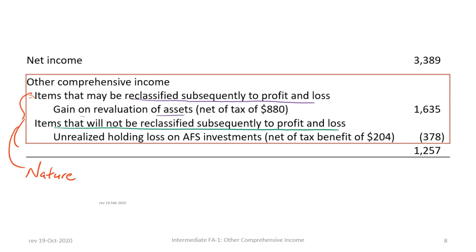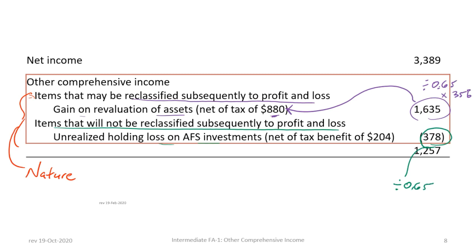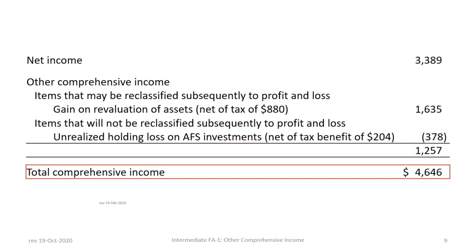For the gain on revaluation of assets, the problem tells us that the gain on an after-tax basis is $1,635,000, so we do a backwards calculation to determine the tax implication. Taking $1,635 divided by 0.65 — because the tax rate is 35% — and multiplying by 35% gives us $880. Similarly, for the unrealized holding loss on AFS investments, $378 divided by 0.65 gives the before-tax amount, and times 35% gives a tax benefit of $204. So the OCI section shows a $1,635,000 gain net of tax on revaluation of assets and a $378,000 loss on available-for-sale investments net of a tax benefit of $204, resulting in other comprehensive income of $1,257,000.